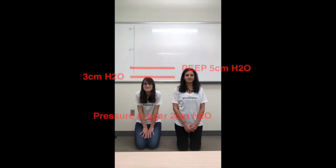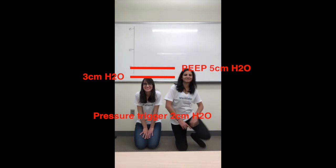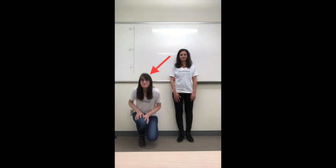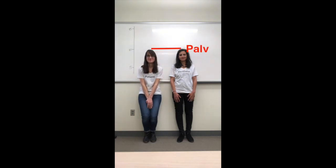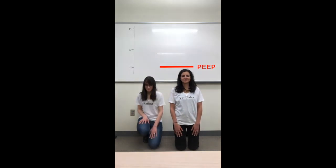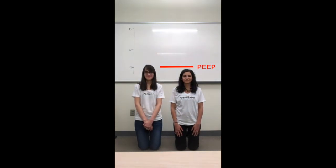Now say she wants to initiate a breath and the pressure trigger is set at minus two centimeters of water. As the patient, she has to drop to three centimeters of water so that I, as the ventilator, know that she wants to take a breath. When I stand up in response, there is a delta P again and flow goes into the patient. She stands up to my level and the pressures equilibrate again at the end of the inspiratory portion of the breath. Then during exhalation, I will kneel back down again to PEEP, and she will also kneel back down — that's how it works when she's trying to trigger.